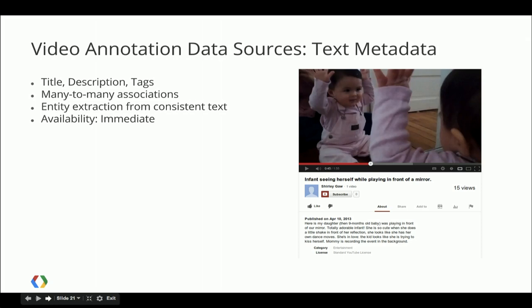The concept of infant can be communicated by the word baby, by the word infant, by the word toddler, and so on. And likewise, the word baby without any context can refer to a Justin Bieber song, can refer to an infant, can refer to a number of other things. For that reason, we depend on the text to be consistent to allow us to correctly dereference what concepts are mentioned therein.